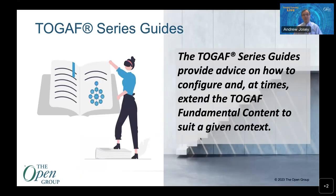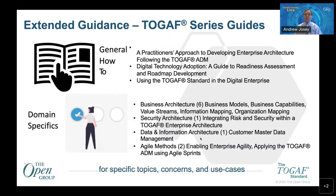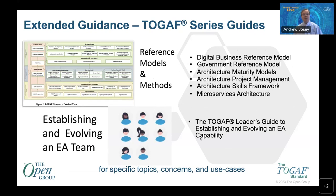The TOGAF series guides provide the how-to. They cover a range of topics, from general how-to guidance and guidance on establishing an architecture team, through to reference architectures. We have general how-to for practitioners, guidance for using the TOGAF standard in a digital enterprise, domain specifics — particularly strong on business architecture with about six different business architecture series guides — data and information architecture, agile methods using the TOGAF ADM with agility, reference models, and a guide dedicated to how you establish and evolve an EA team.